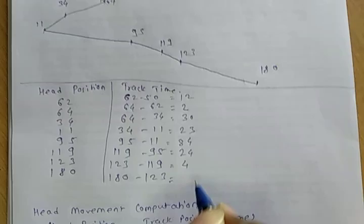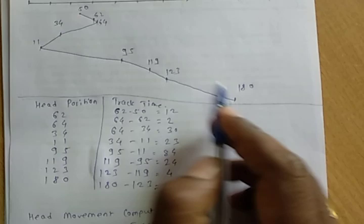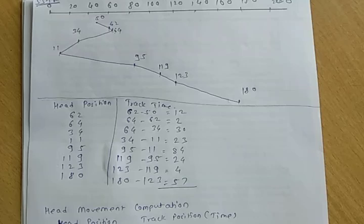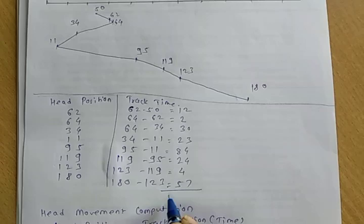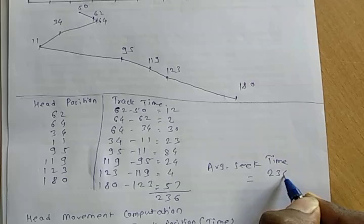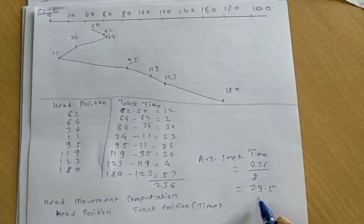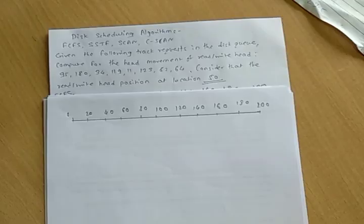The total seek time for all tracks in SSTF is 236. The average seek time is 236 divided by 8, which equals 29.5. So in SSTF the average seek time is 29.5, while in FCFS the average seek time was 80.5. The next third disk scheduling algorithm is SCAN.